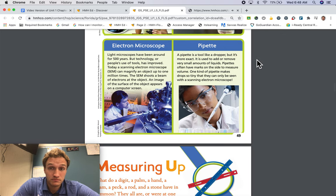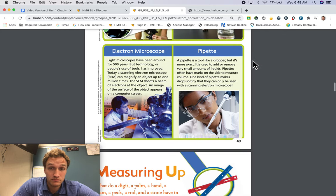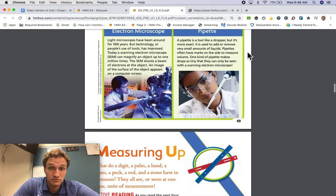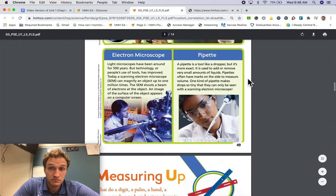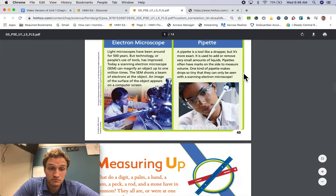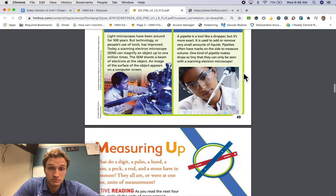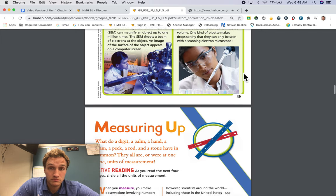Pipet. A pipet is a tool like a dropper, but it's more exact. It is used to add or remove very small amounts of liquids. Pipets often have marks on the side to measure volume. One kind of pipet makes drops so tiny that they can only be seen with a scanning electron microscope.